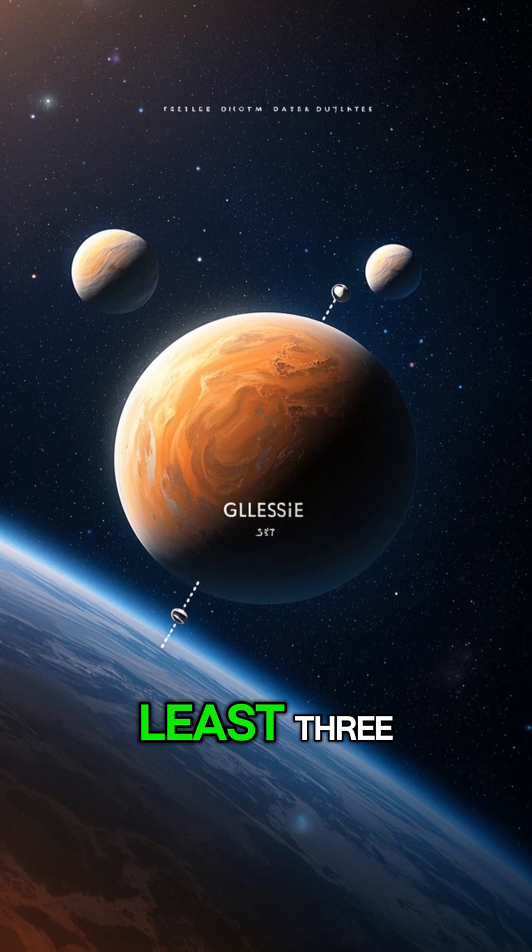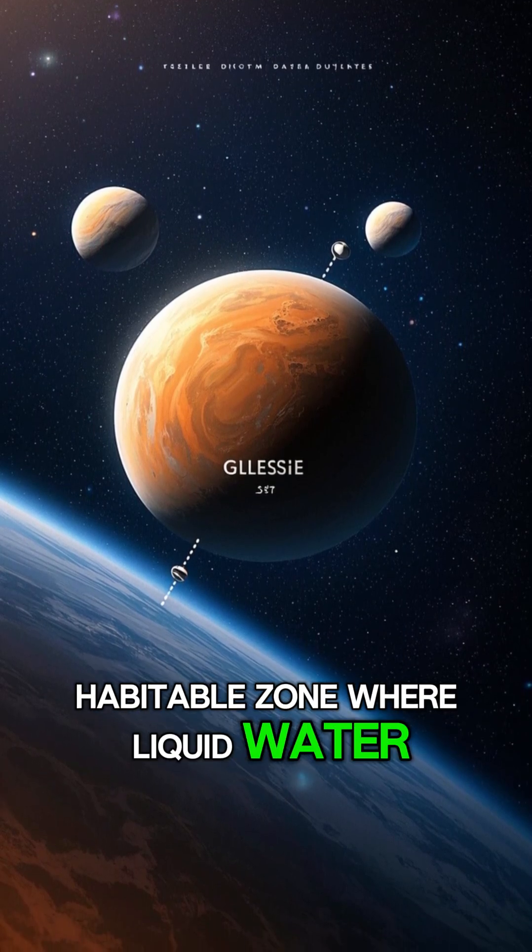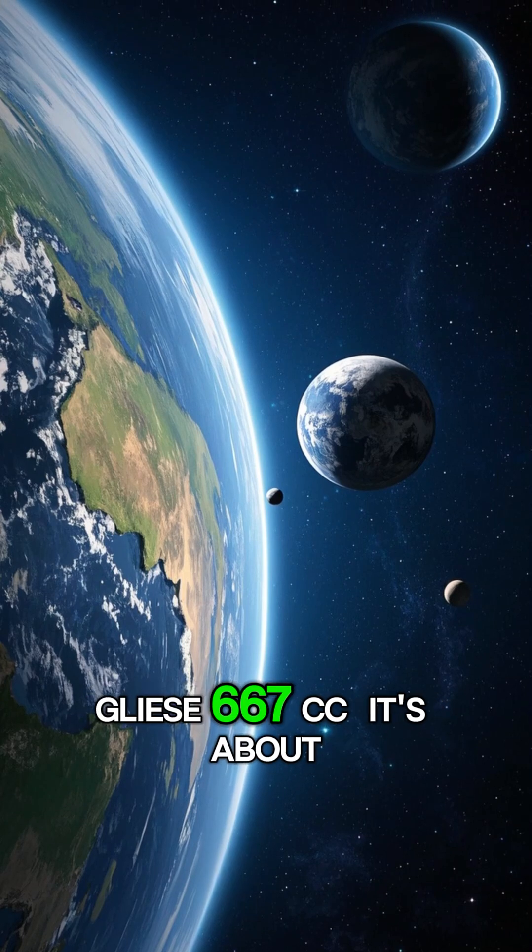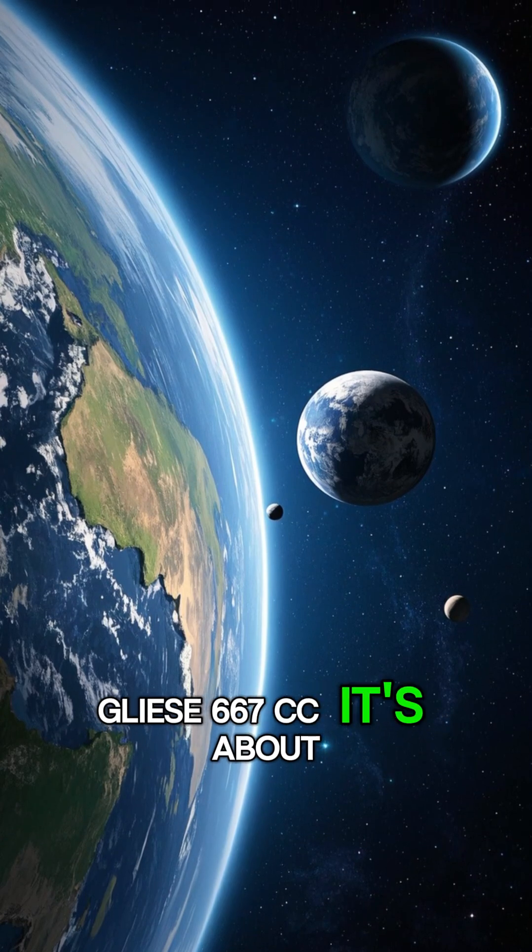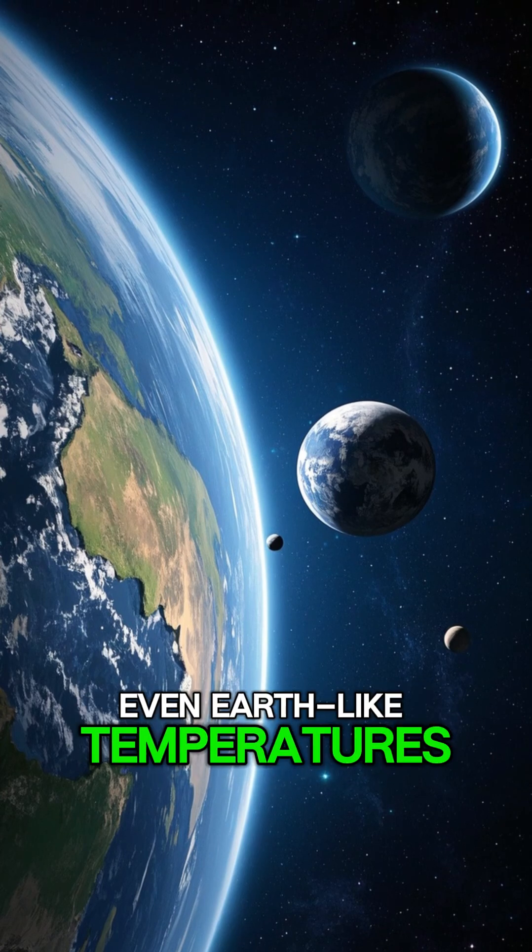And astronomers have found at least three Earth-like planets orbiting in its habitable zone where liquid water could exist. The most interesting one is the closest planet, Gliese 667 cc. It's about twice the size of Earth and could have oceans and even Earth-like temperatures.